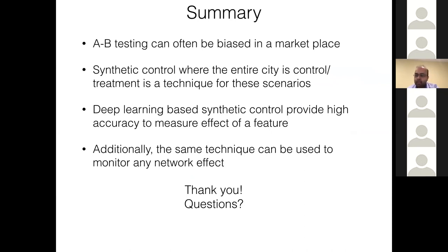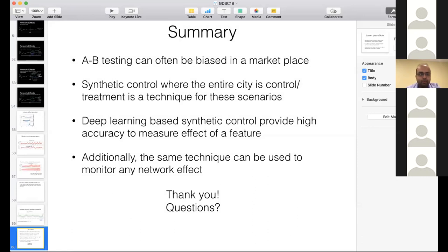In summary: A/B testing is definitely one of the most popular ways of hypothesis testing and we use it at Uber probably 80% of the time. However, there are other techniques that work where A/B testing fails, especially relevant for marketplace-type scenarios. What we have developed is a deep learning-based synthetic control, which provides higher accuracy compared to corresponding linear models of synthetic control. We apply it both for experimentation and to monitor any negative network effects. That's all I have and I'm happy to take any questions.